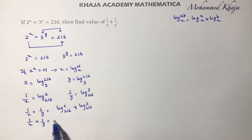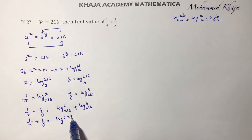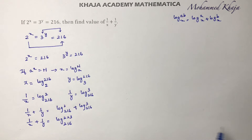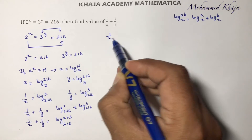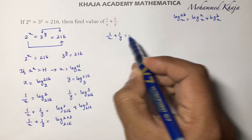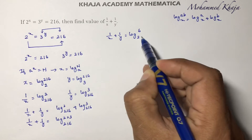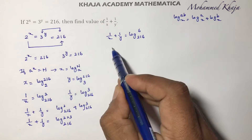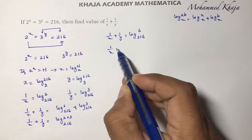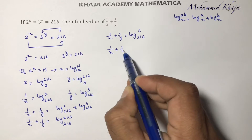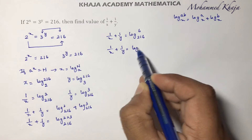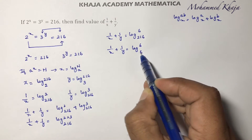So 1 by x plus 1 by y is log 2 into 3 to the base 216. That gives us 1 by x plus 1 by y equals log 6 to the base 216.